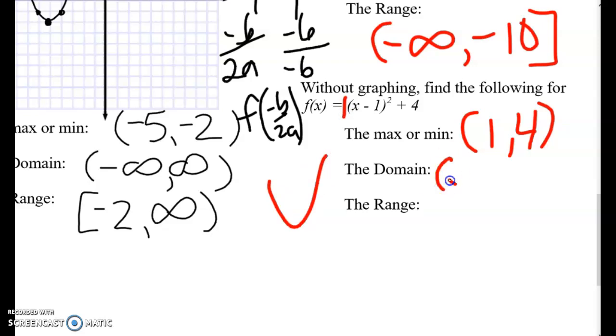So therefore, does that change your domain at all? No. Because x could always be anything on an x squared when the mother function is x squared. And the range. So it's opening up and the lowest point is 4. So it goes 4 up to infinity. Can it be 4? Yes, it can be 4. So I close that. And I am all done.